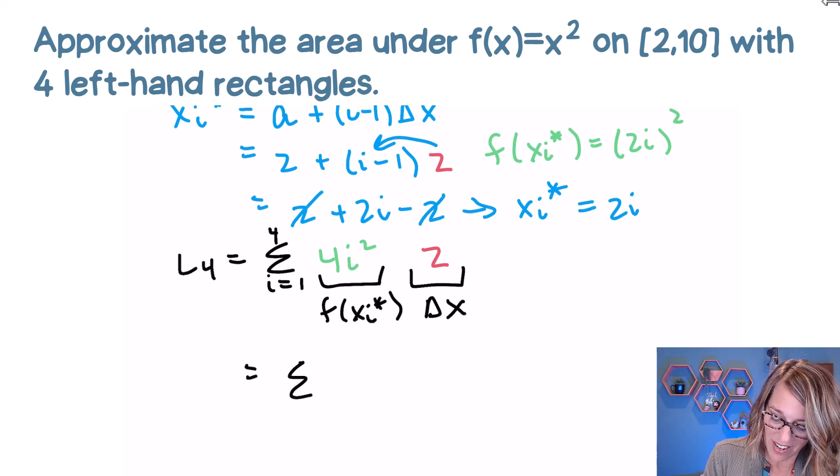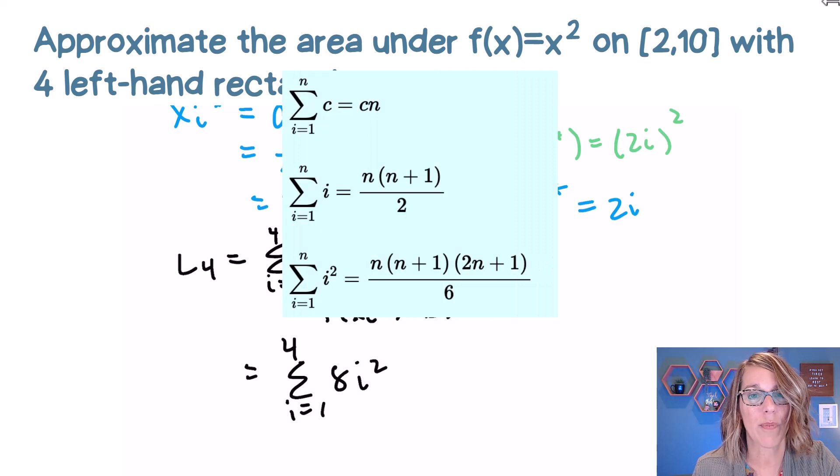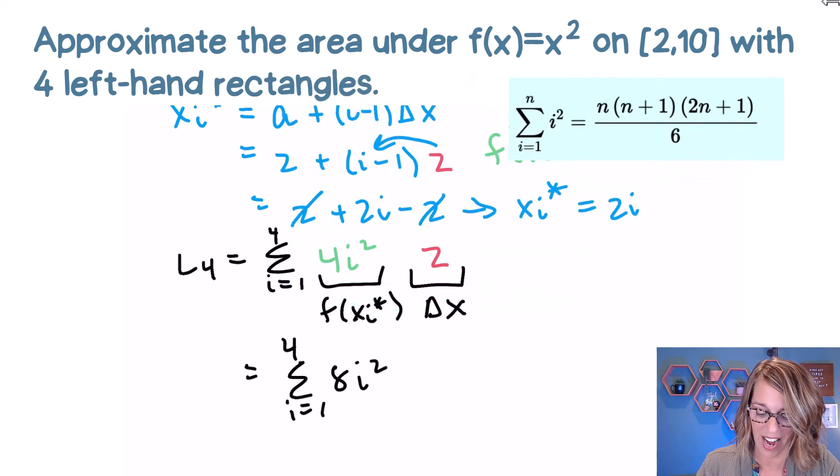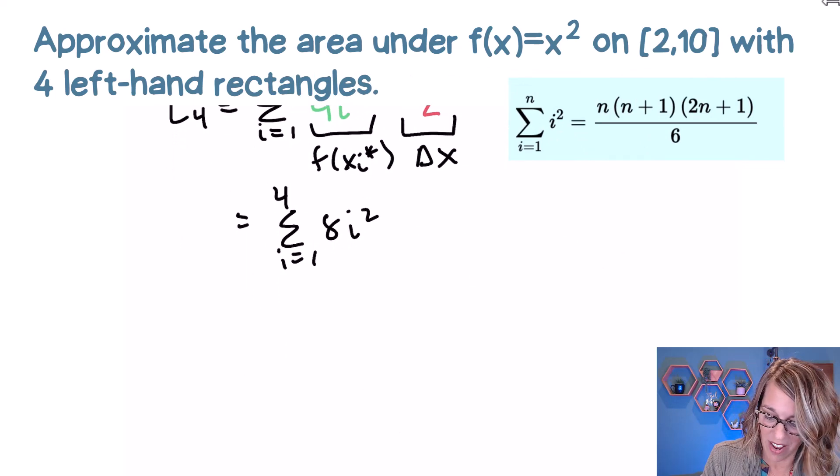Simplifying this, we've got our sum as i goes from one to four, eight i squared. Now I'm ready to use one of my summation formulas, and I only need the one for i squared. So let's go ahead and pull that eight out in front.